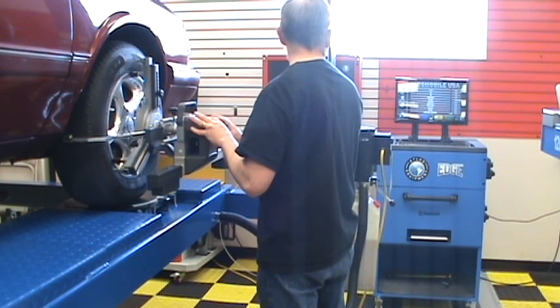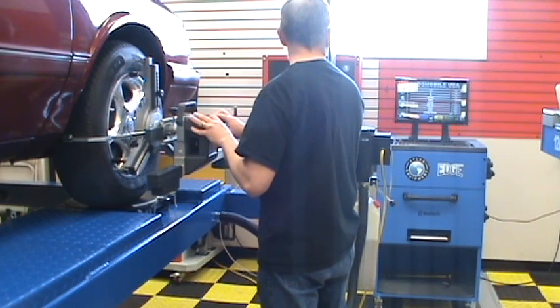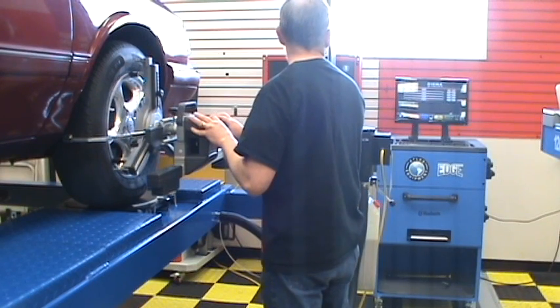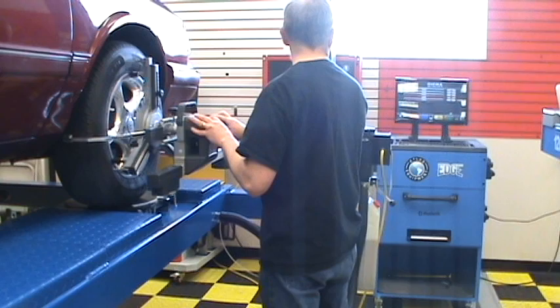The Atlas Edge 601 Alignment Machine is a camera-based wireless alignment system that incorporates Bluetooth communication, providing communication for all four sensors and the main console without the need for cables.